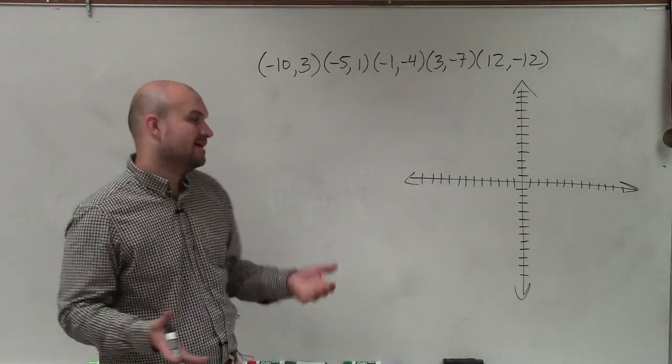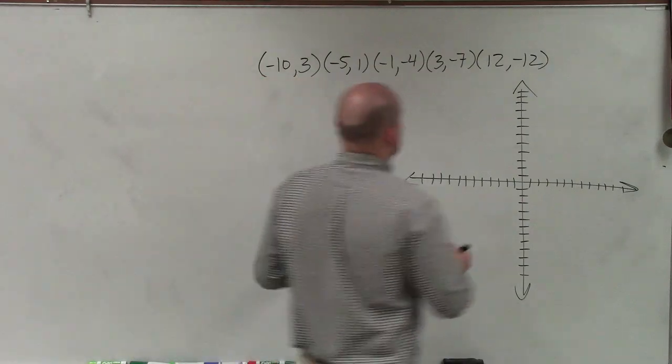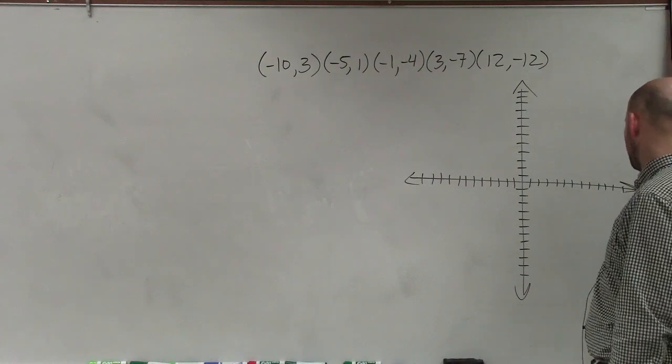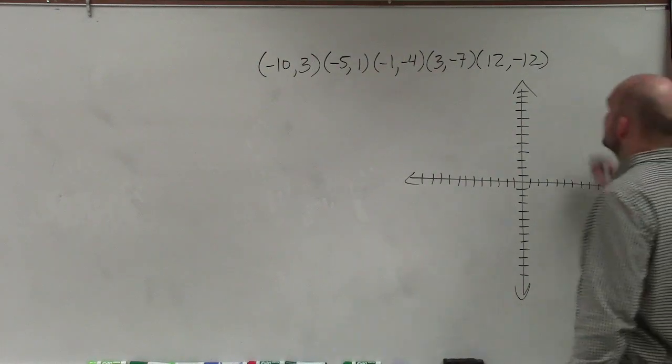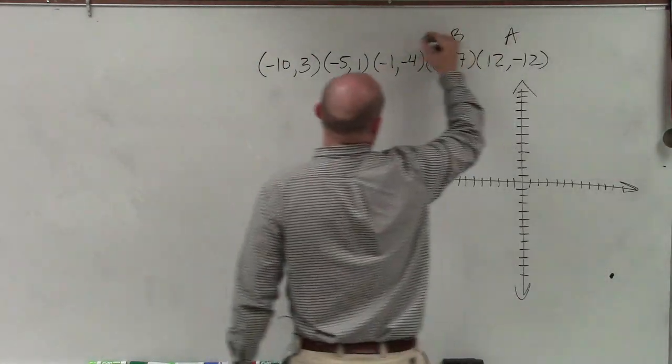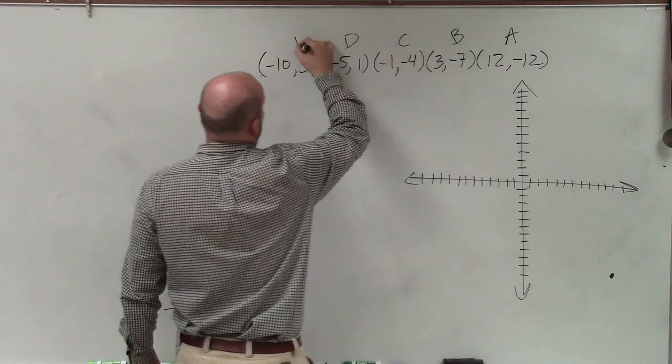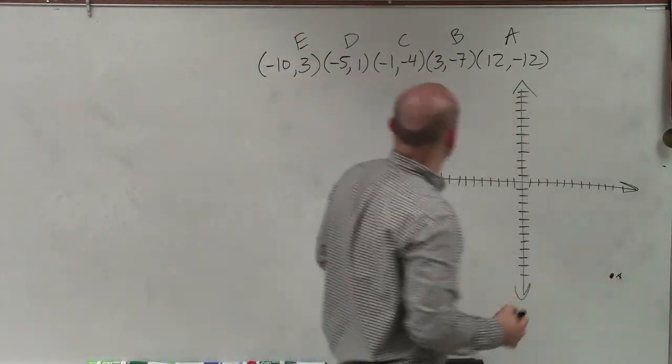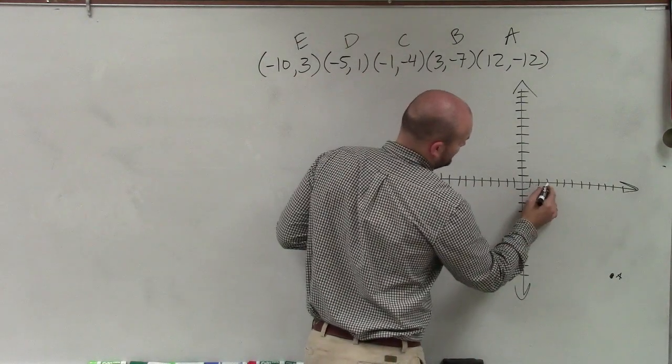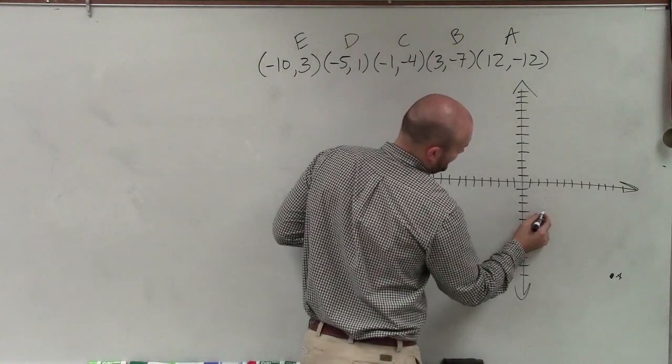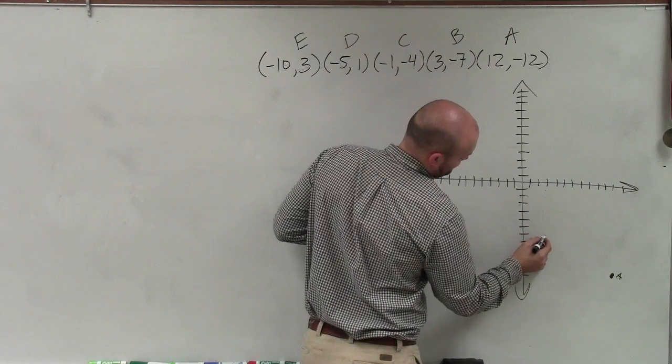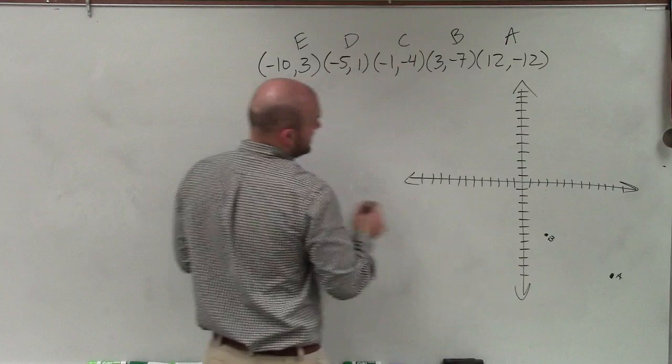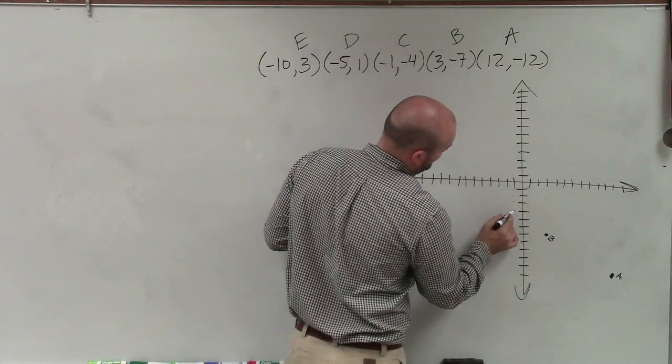The first thing we're going to do is plot these points. So I have 12 comma negative 12. Let's label these points so I remember that I have them. So that's a. Then I'll do b, which would be 3 comma negative 7. So 1, 2, 3, down 7: 1, 2, 3, 4, 5, 6, 7.